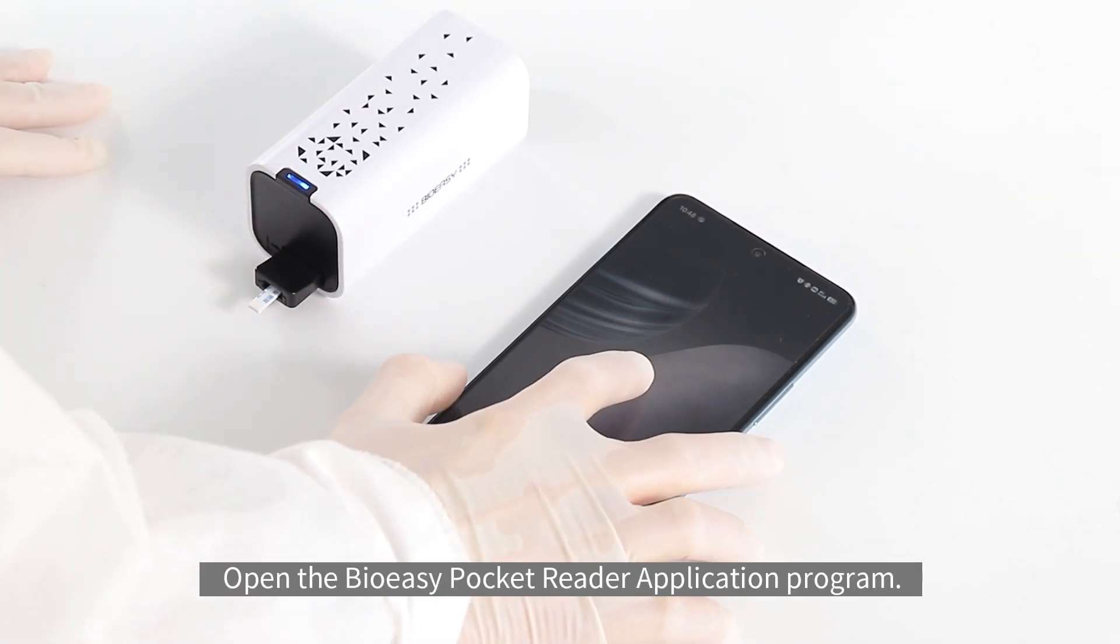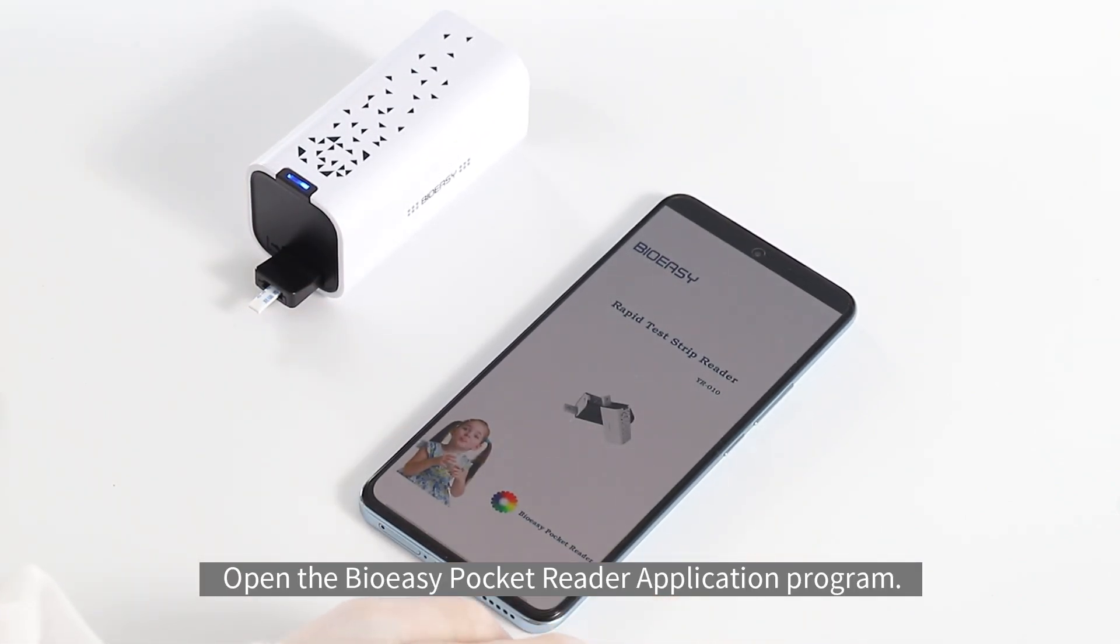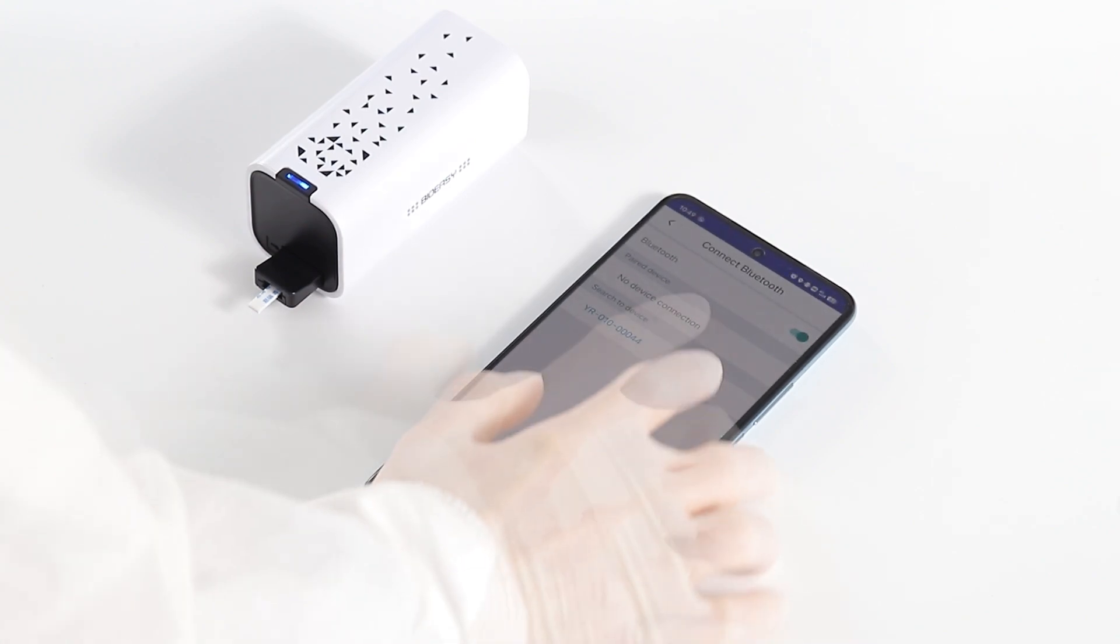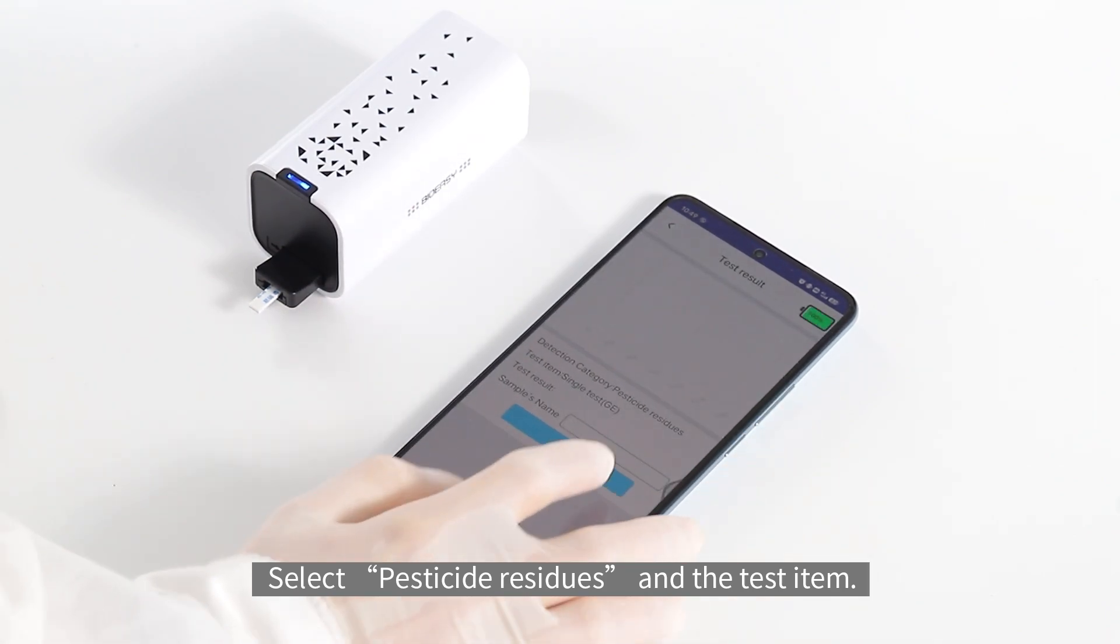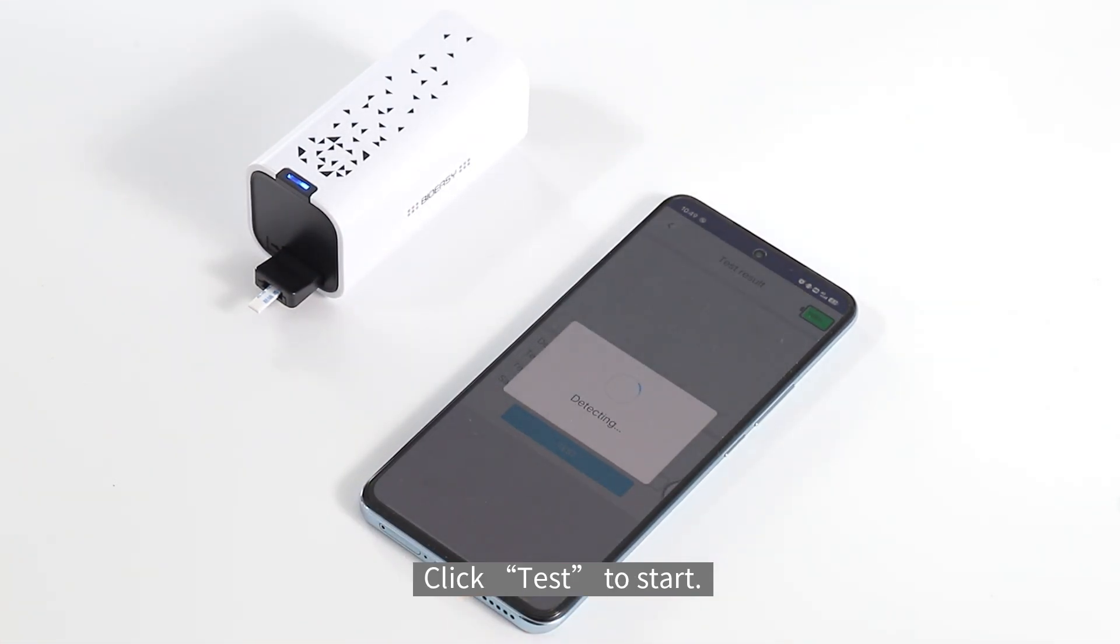Open the BioEasy Pocket Reader application program. Click the cross-pattern test, connect the Bluetooth. Select pesticide residues and the test item, click test to start.